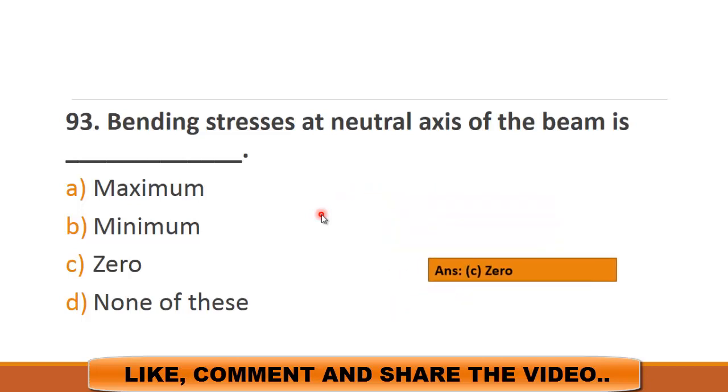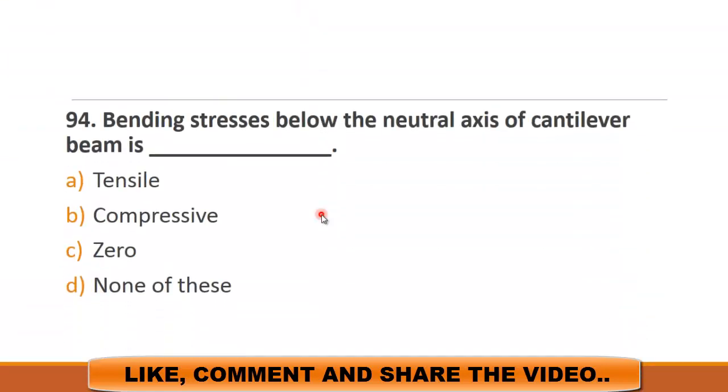MCQ number 94 is: bending stresses below the neutral axis of cantilever beam is. The choices are a) tensile, b) compressive, c) zero, and d) none of these. We know that in simply supported beam at the upper fiber of the beam there is always compression and at the lower fiber of the beam there is tension. But in case of cantilever beam it is the opposite of this, and at the lower fiber there is compression stresses while at the upper fiber there is tensile stresses. So the right choice for this question is b) compressive stresses.